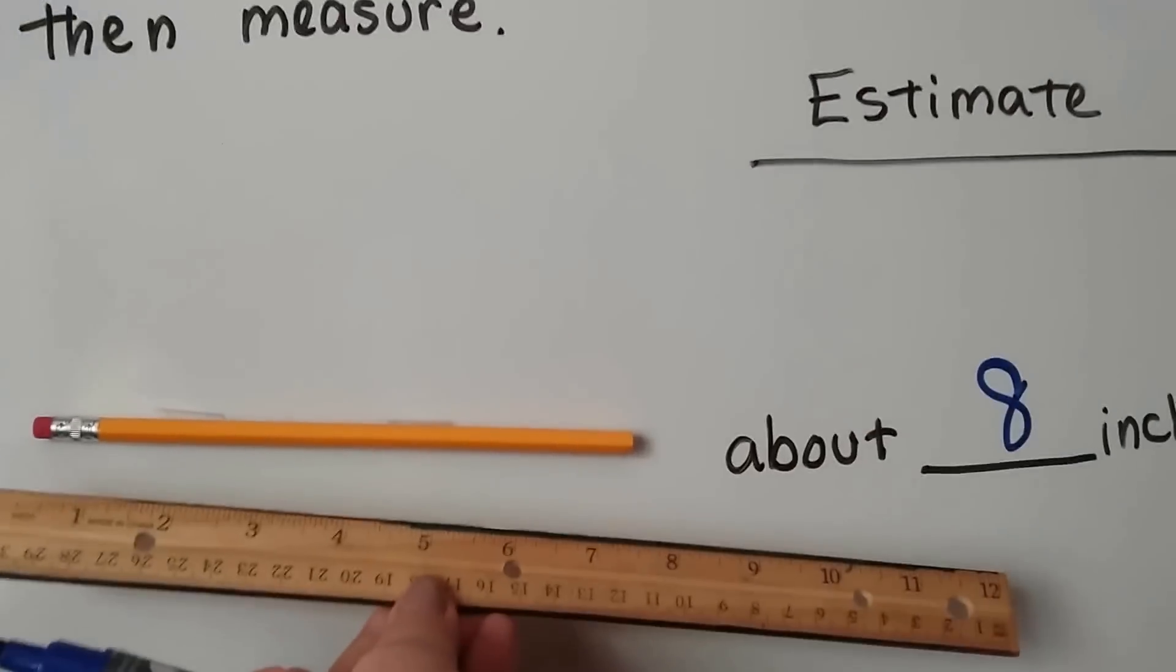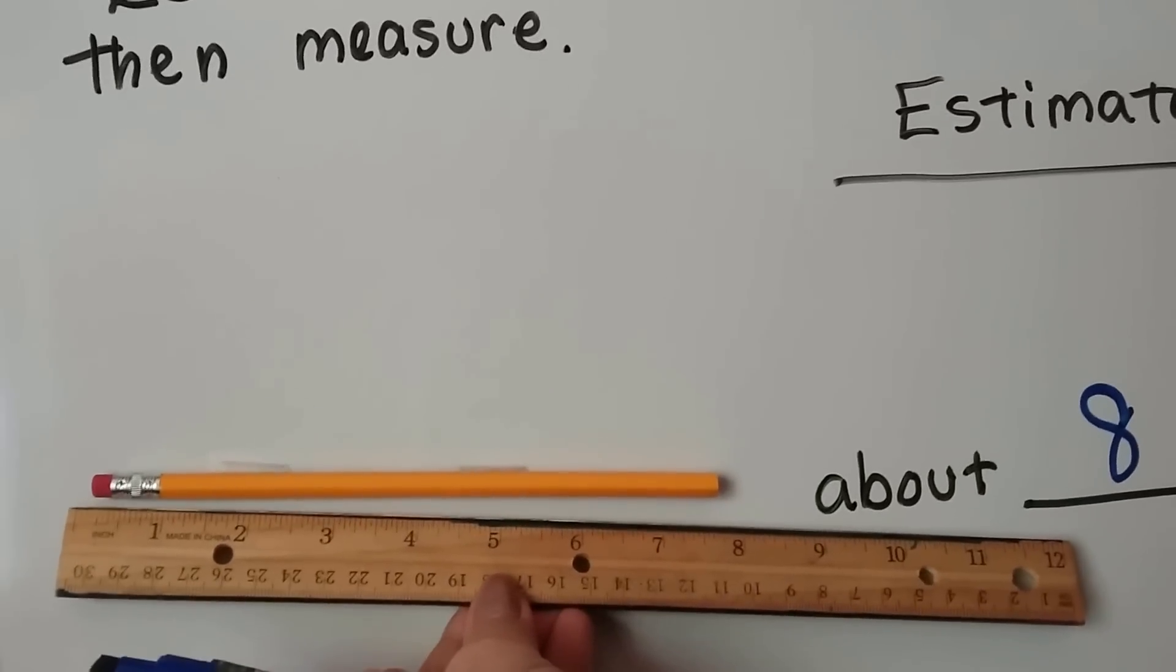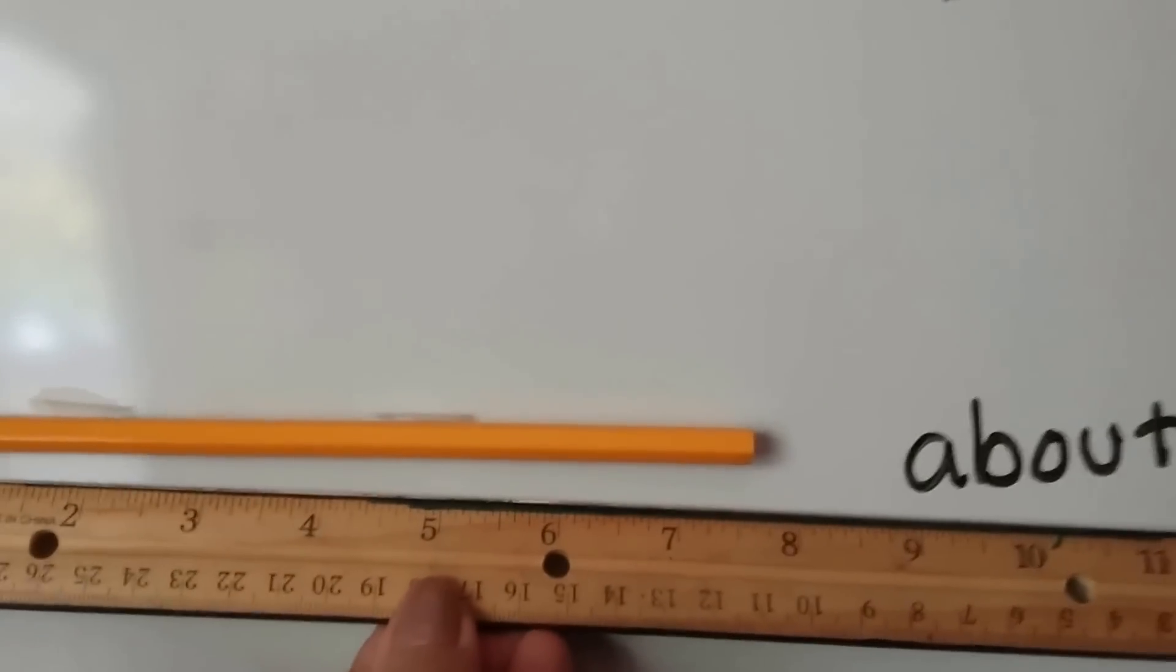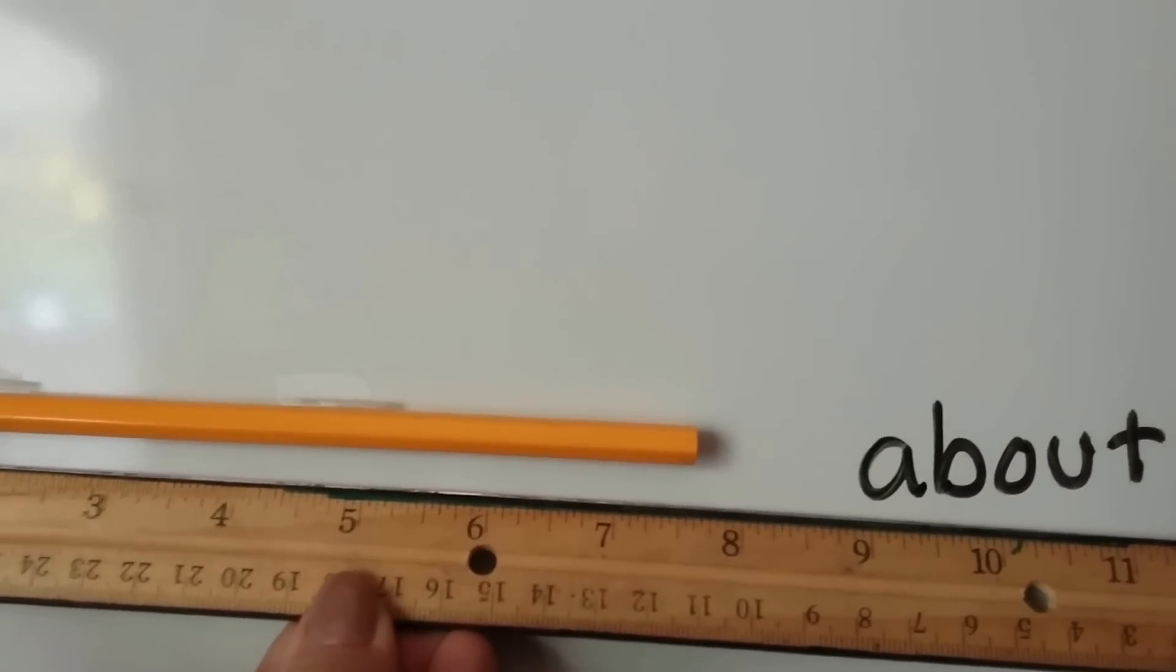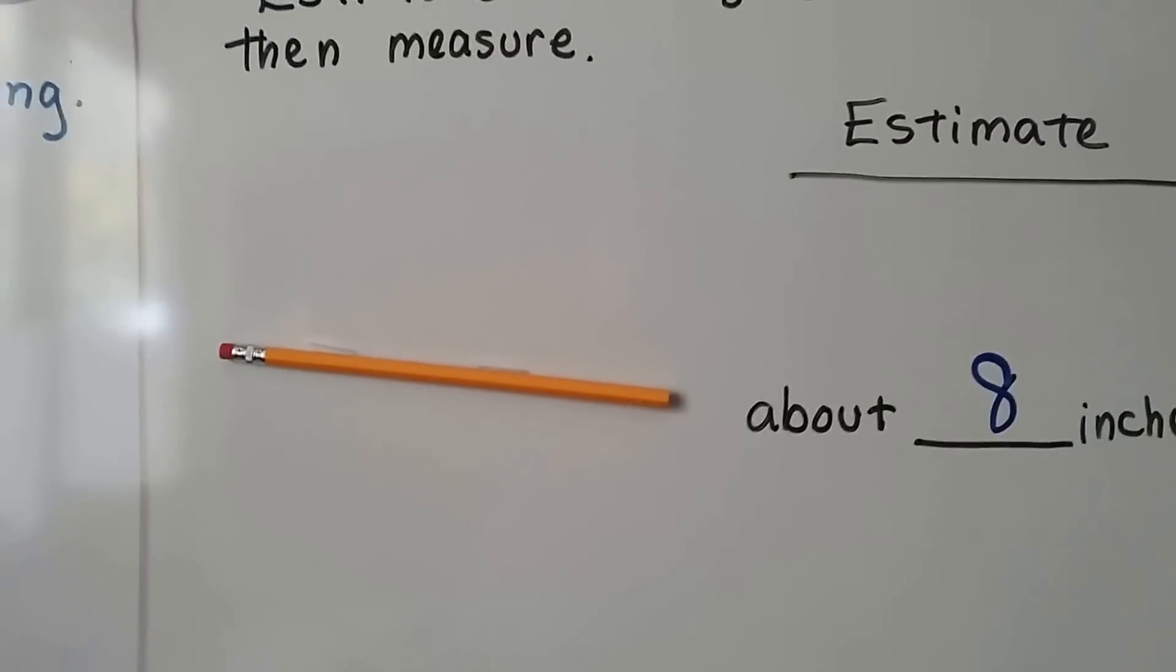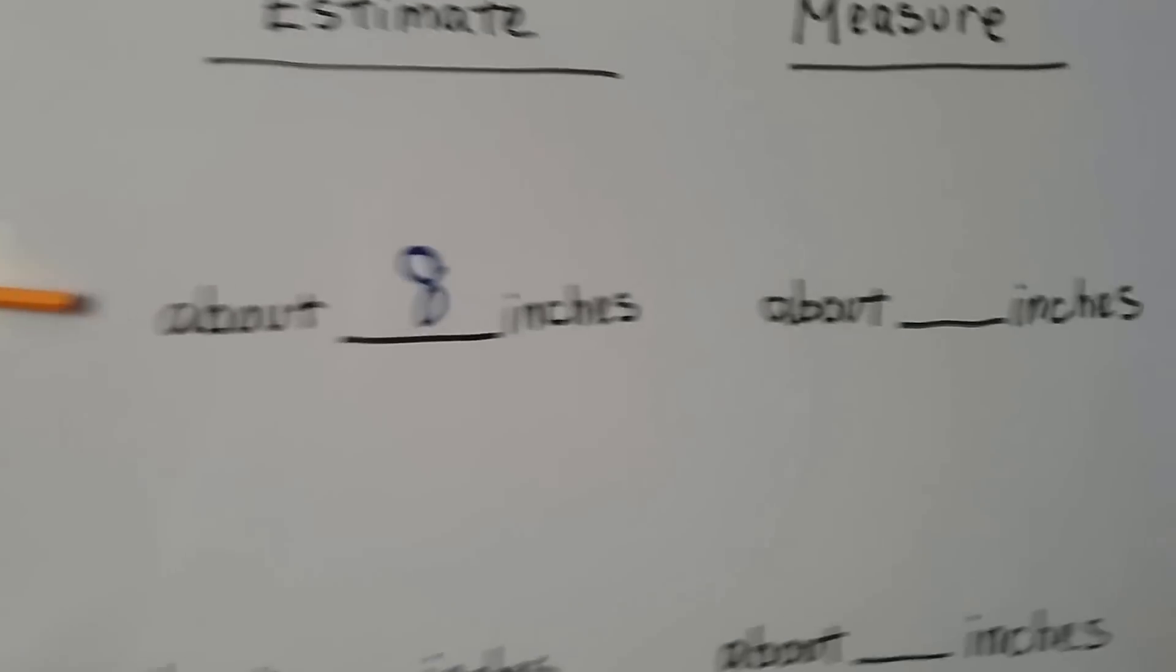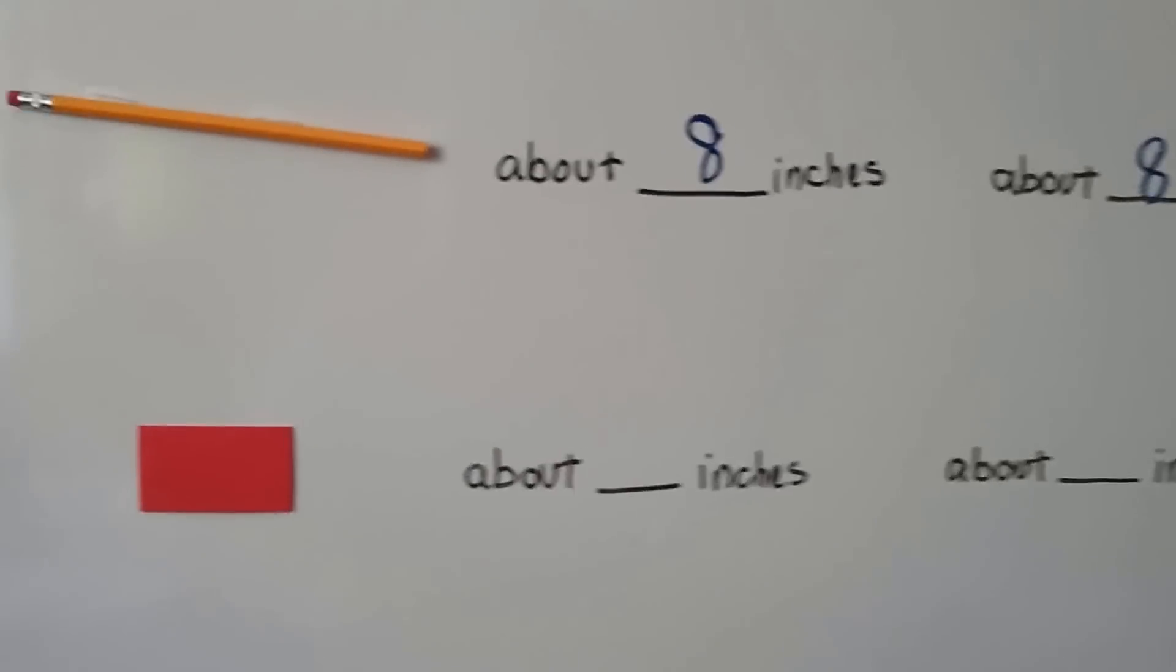Now, let's measure it. Look at that. It is about 8. See how it stops at the 8 right here at the end? It's not exact. That's why we're using the word about. We're just estimating. So, it is about 8. So, that was a good guess on my part.